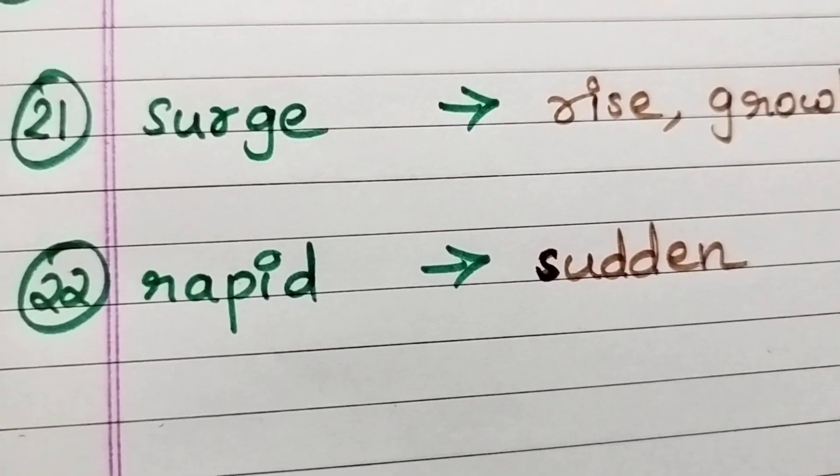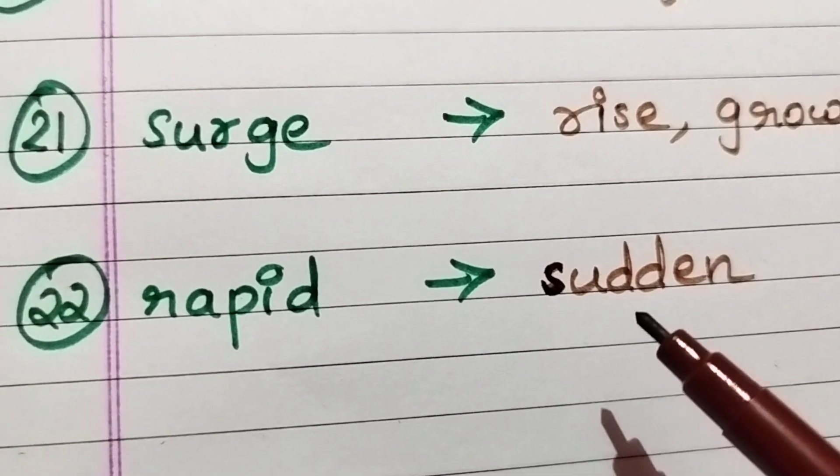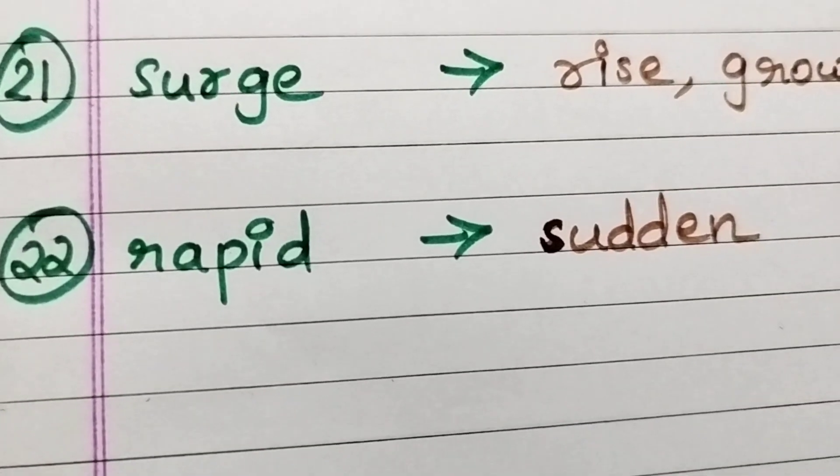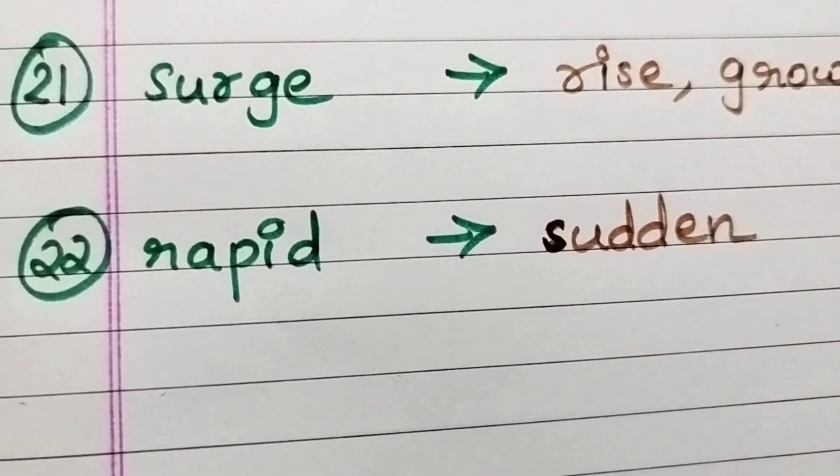Rapid, sudden. Rapid movement means sudden movement or immediate movement.